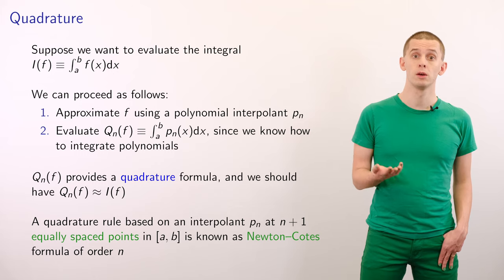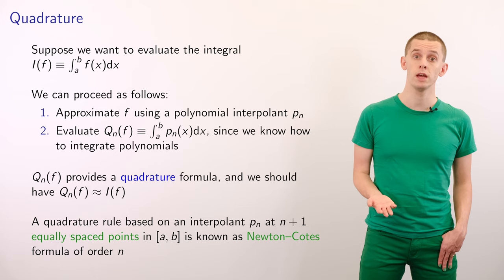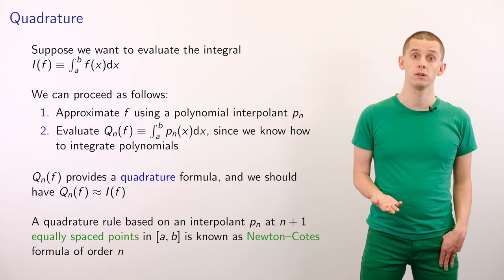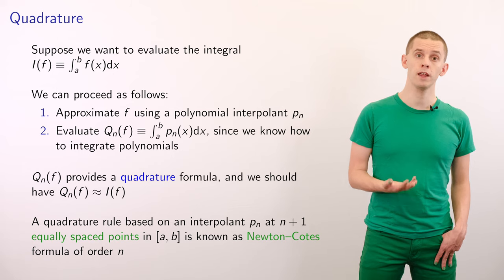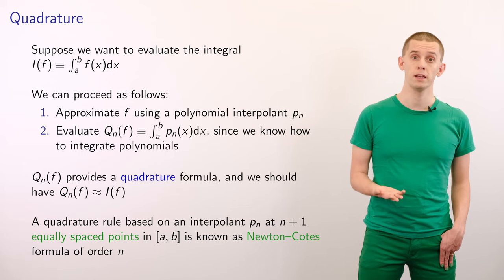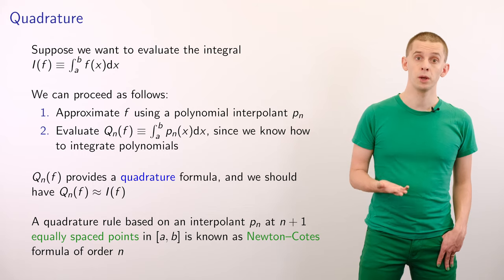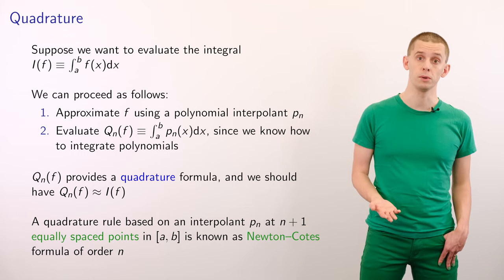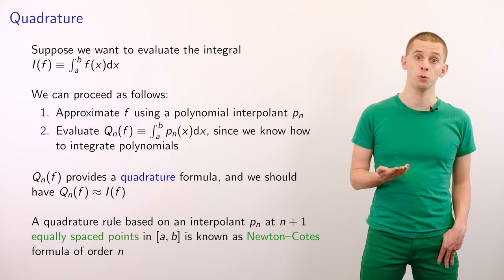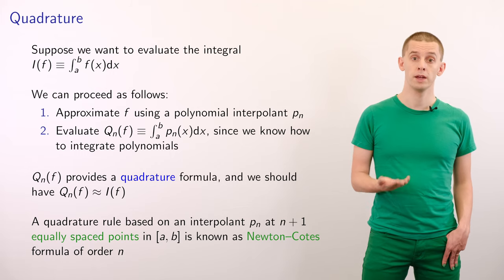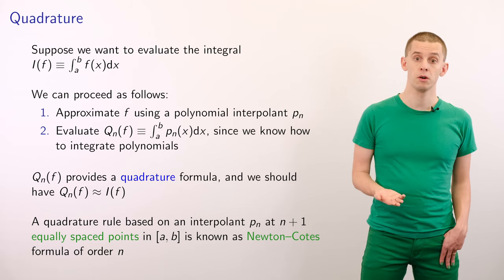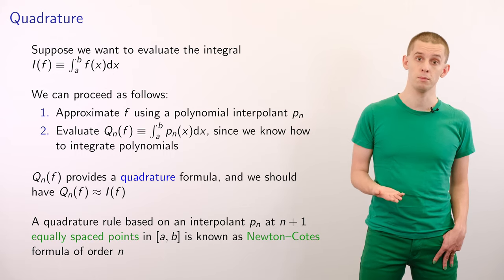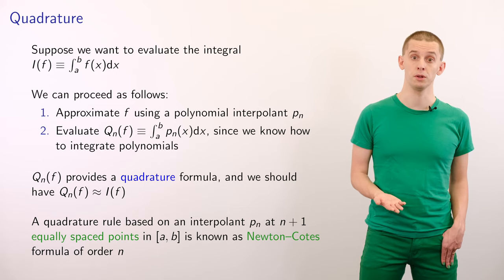Suppose we want to evaluate the integral i of f, which is equal to the integral from a to b of f of x dx. One way to proceed is to first approximate f using a polynomial interpolant pn, and then evaluate qn of f, which would be the integral from a to b of pn of x dx. We could do this exactly since we know how to integrate polynomials. Then qn of f provides us with a quadrature formula, and we would hope that qn of f would be approximately equal to i of f. A quadrature rule based on an interpolant pn at n plus 1 equally spaced points over the interval from a to b is referred to as the Newton-Cotes formula of order n.